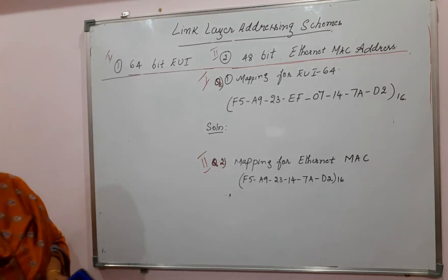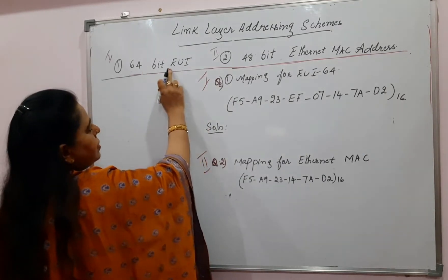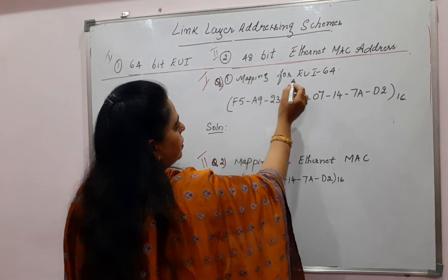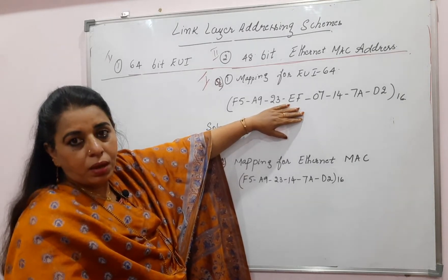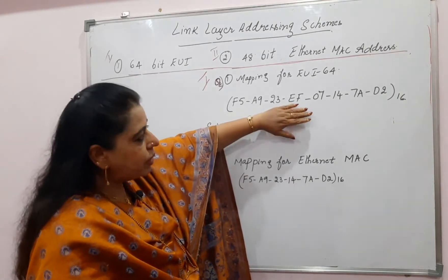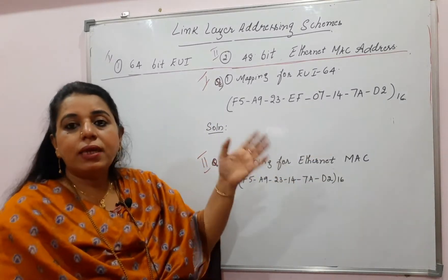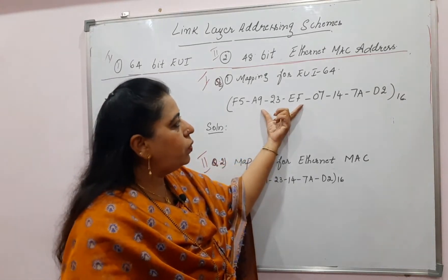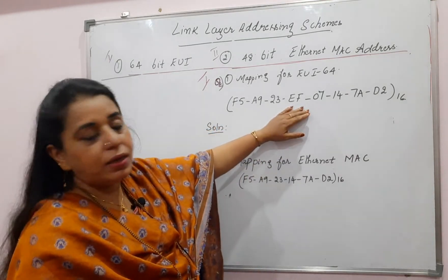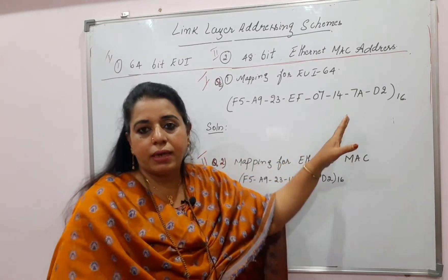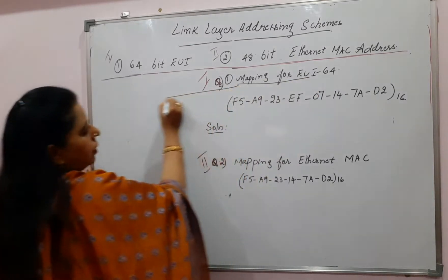Let us see what kind of problem will be asked. The very first type of physical address is 64-bit EUI. A question can be asked for EUI 64-bit only. Given will be a 64-bit EUI address, and from this address you are going to arrive at the interface identifier. In the question, they will ask: what is the interface identifier for the given EUI 64 address? The EUI 64 address will be given in hexadecimal numbers.